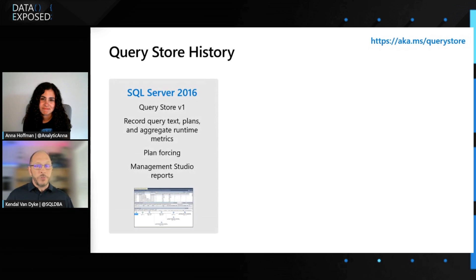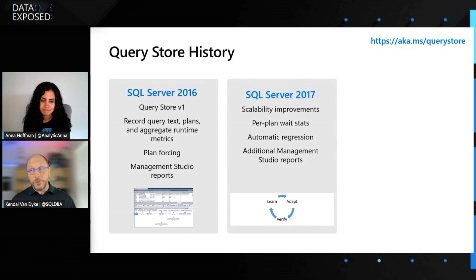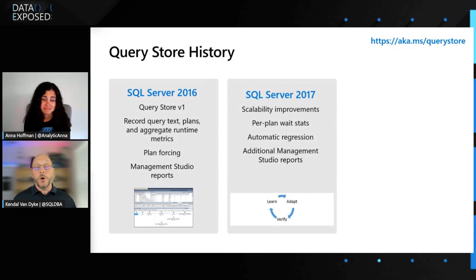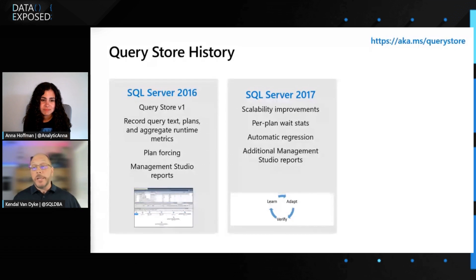It didn't quite do everything, though — it was a great start. So we improved it in SQL 2017. We added some scalability improvements based off of feedback from customers. We also introduced per-plan wait stats. When you're trying to figure out if you're waiting overall on CPU or memory or disk or some other resource in SQL Server, you now can see that on a per-plan basis. And then we started dipping our toe in the water of intelligent query processing with automatic plan regression detection. That scenario where a plan goes off the rails at 2 o'clock in the morning — with automatic plan regression detection enabled, the engine automatically determines there was a regression issue and forces that last known good plan. We also added some additional Management Studio reports to help surface those things.